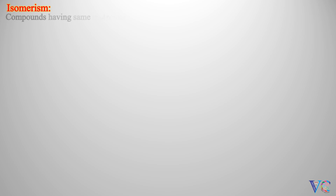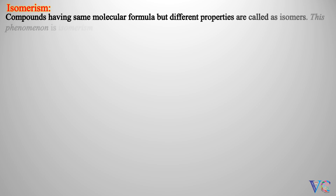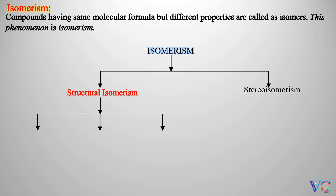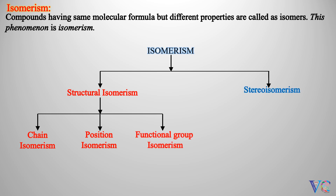Compounds having the same molecular formula but different properties are called isomers. This phenomenon is isomerism. Isomerism is basically of two types: structural isomerism and stereoisomerism. Structural isomerism is mainly of three types: chain isomerism, position isomerism, and functional group isomerism. Stereoisomerism is basically of two types: geometrical isomerism and optical isomerism.